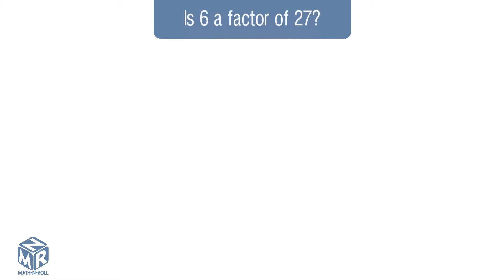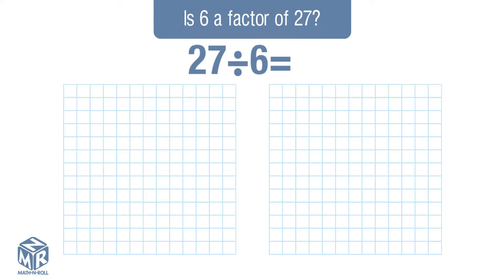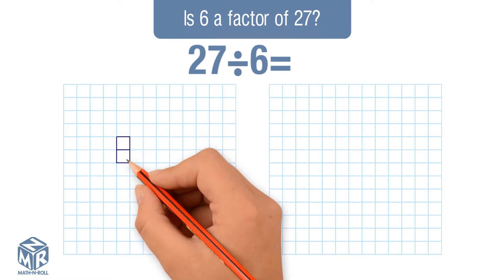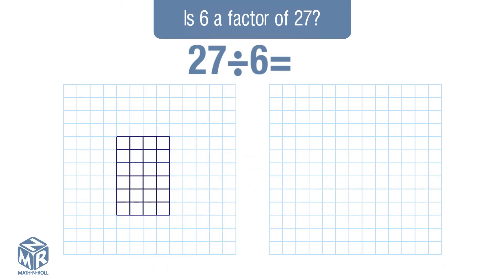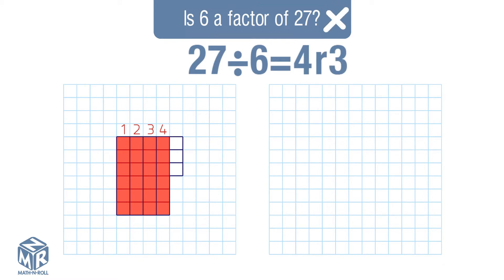Let's try another example. Is 6 a factor of 27? To check if 6 is a factor of 27, we have to divide 27 by 6. If we have no remainder, then 6 will be a factor of 27. Let's solve using an array. Draw an array with 6 rows and distribute 27 tiles amongst the 6 rows. We got 4 complete columns with 3 tiles remaining, so 3 is our remainder.